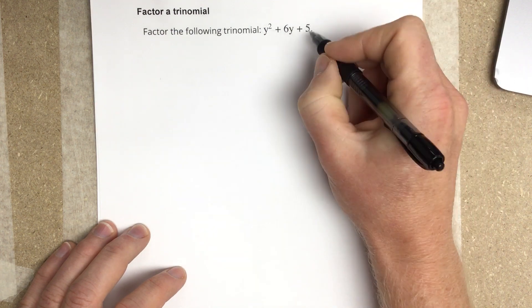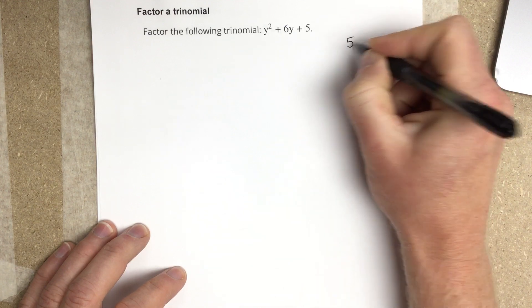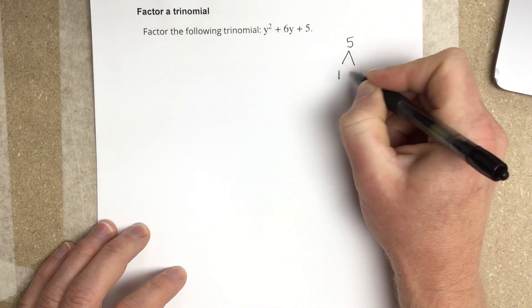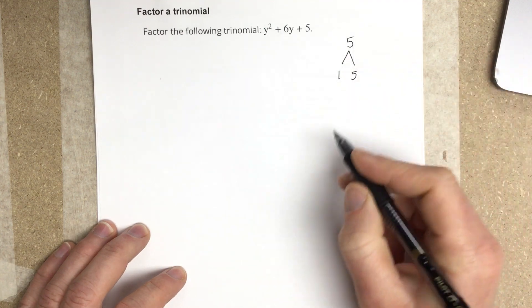So what we do is we write out the ending term. When we factor this, we'll write out 5. And then we want to write out all the factors of 5. So 1 times 5 is the only factors of 5.